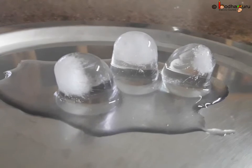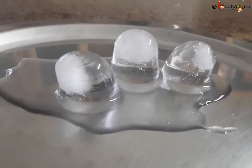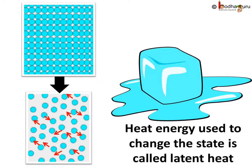Once the melting is over, the heat energy will start increasing the temperature again. So the particles in water at 0 degrees centigrade, i.e. 273 Kelvin, have more energy compared to the particles in ice at the same temperature, i.e. 0 degrees centigrade. The heat energy used to change the state of matter is called latent heat. The amount of heat energy required to change 1 kilogram of a solid into liquid at atmospheric pressure at its melting point is known as the latent heat of fusion.